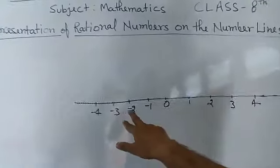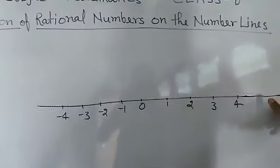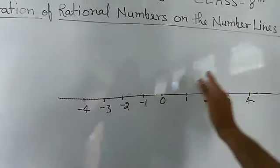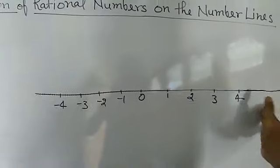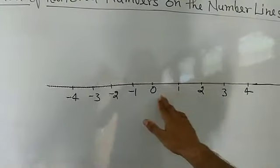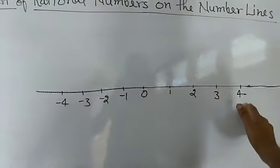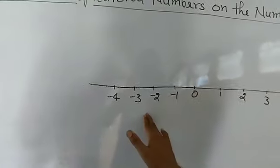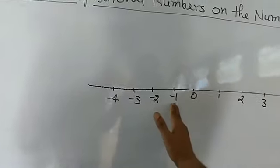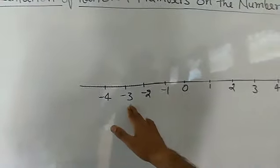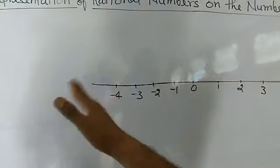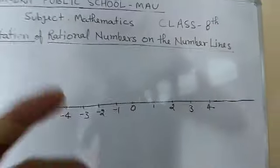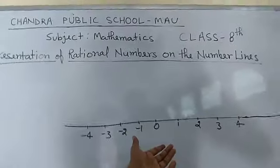I have drawn a line. In the middle I have written 0. On the right side of 0 you get the positive numbers: 1, 2, 3, 4. On the left side of 0 you get the negative numbers: minus 1, minus 2, minus 3, minus 4, minus 5, and so on. That is called the number line.